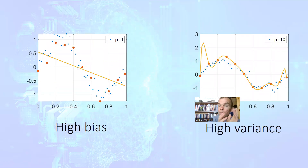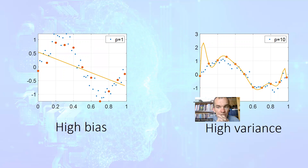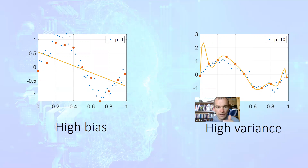There are two main problems for machine learning algorithms. The first is high bias — high bias means the situation where even training data are approximated very poorly, as depicted on the left. High variance is the situation when training data are approximated perfectly, but the independent test data are approximated very poorly. These are two different problems, and they can of course also occur simultaneously.